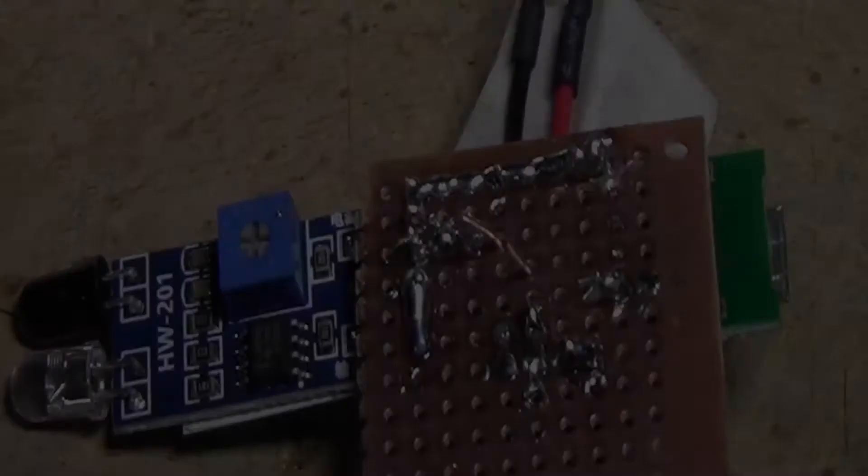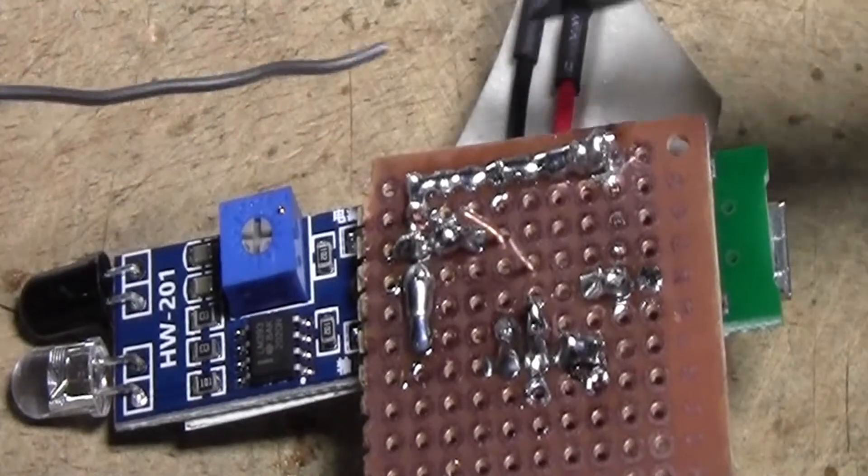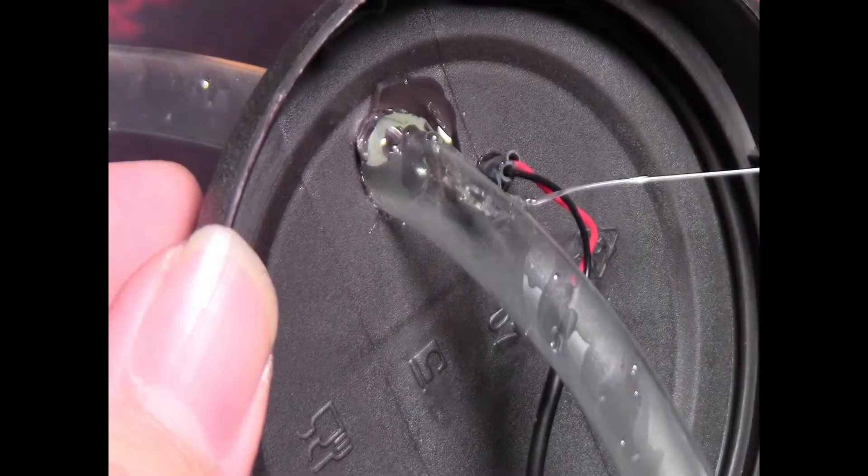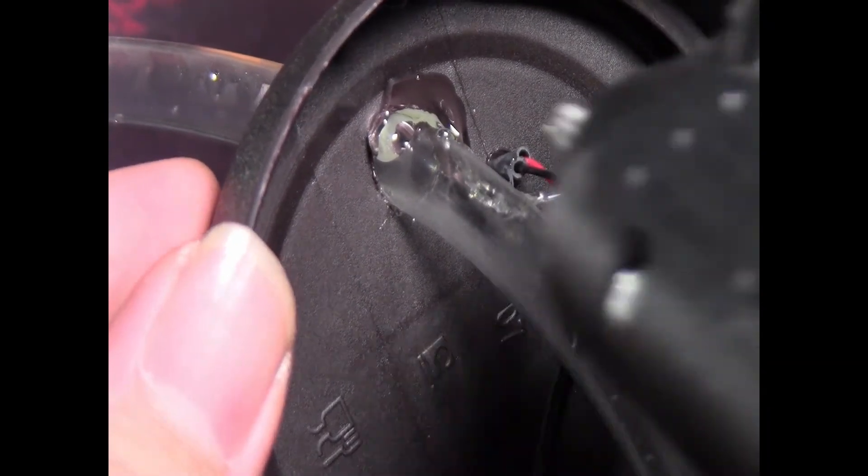Then, insert the motor wires and solder them to the circuit. You can secure the tube and motor wires with hot glue.